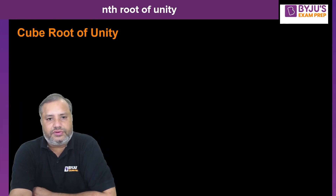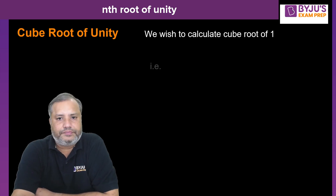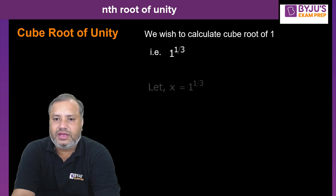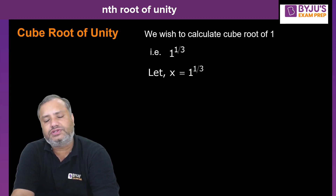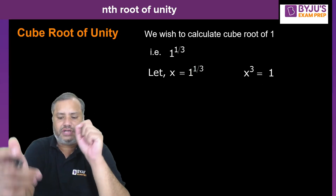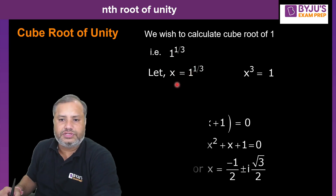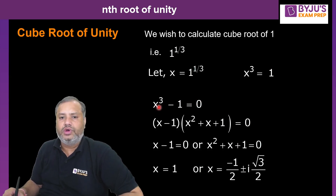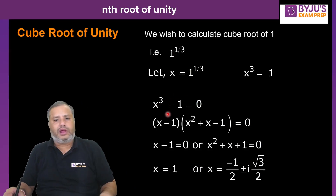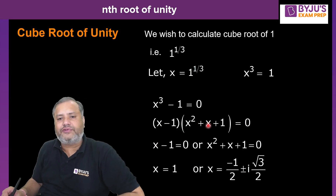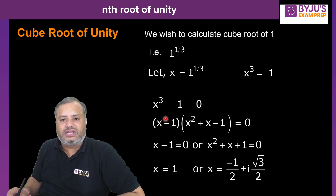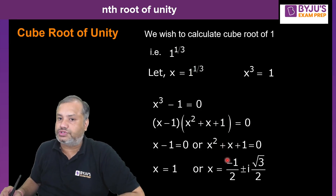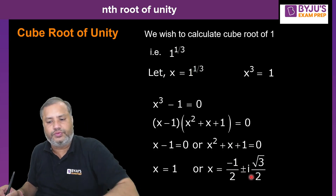Let's calculate the cube root of one — that is, 1 raised to 1/3. Assuming it equal to x, so x = 1^(1/3). On cubing both sides we get x³ = 1. This is a cubic equation; bringing all terms to the left: x³ − 1 = 0. Using the factorization formula a³ − b³, we get two factors: (x − 1) and (x² + x + 1). Equating the first factor to zero gives the real root x = 1, and equating the second factor to zero gives the two complex roots of unity: −1/2 ± i√3/2.